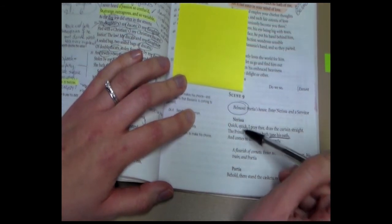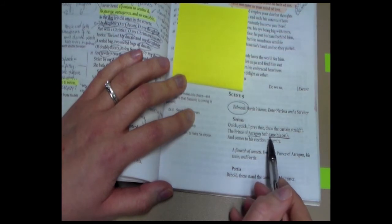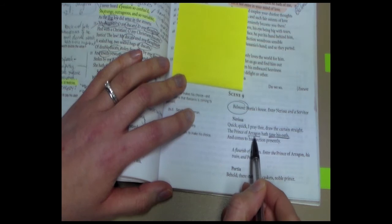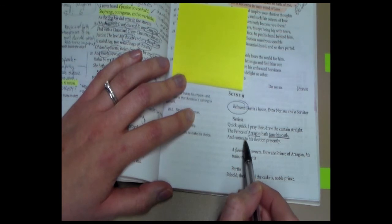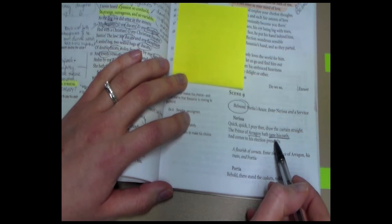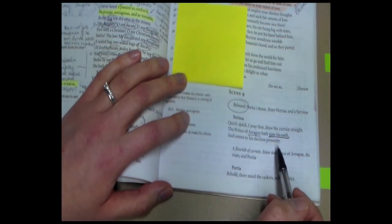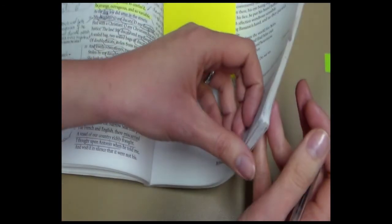We start with Nerissa telling us that the Prince of Aragon has taken his oath. Now, two things here. One, we've underlined Aragon, and you could put down that his name is supposed to tell us a bit about his character, so we should know that he's quite an arrogant man from his name. And also the fact that he's had to take this oath, so he's had to swear to certain rules about the casket choosing. And if we turn over the page, we're going to hear what those rules are.